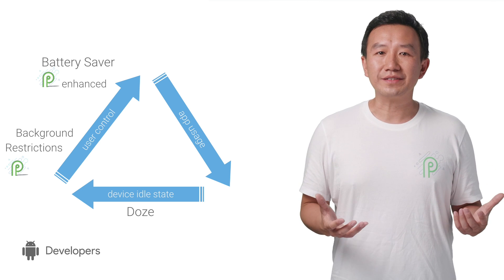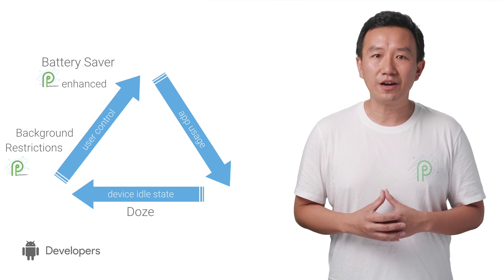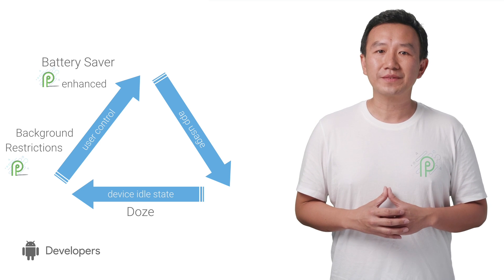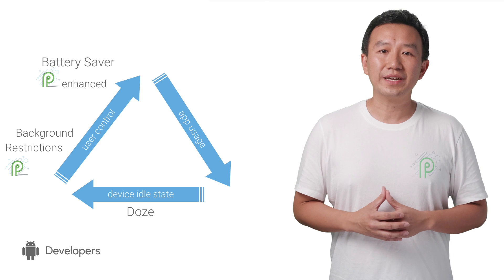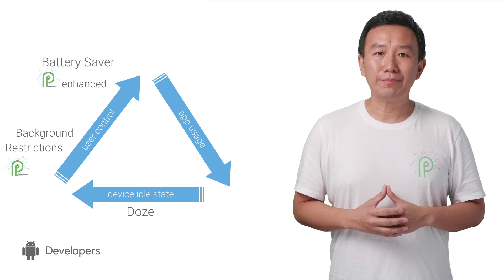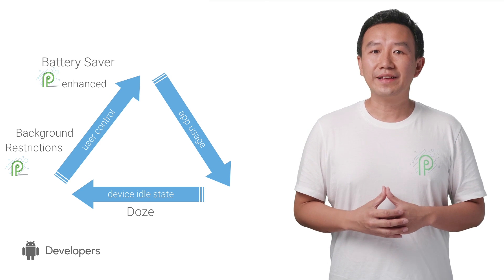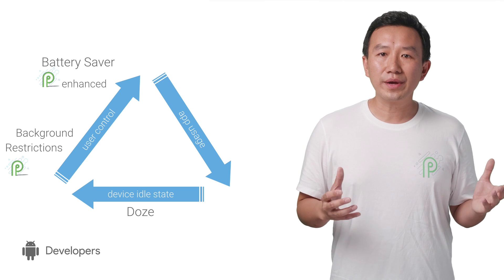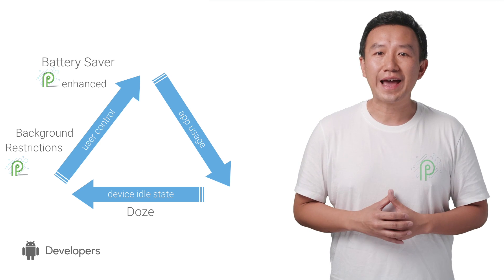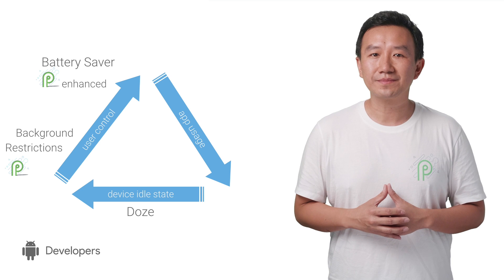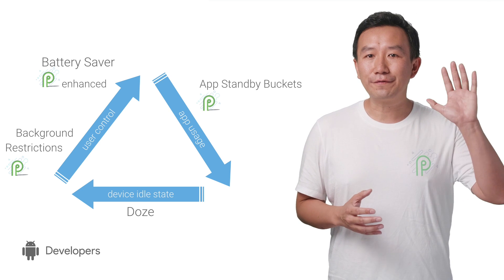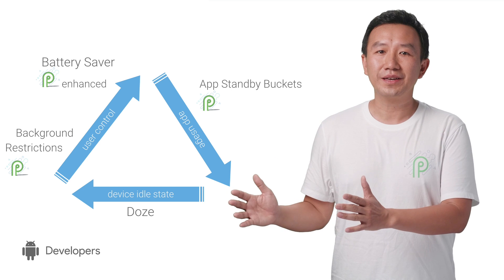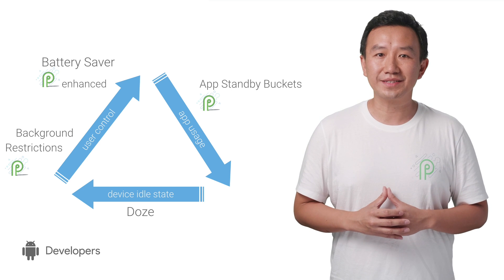Most users only use a small number of installed apps regularly. When you think about it, the total number of installed apps on a device really should have no correlation to battery life. The third dimension aims to tackle this issue based on app usage patterns. In Android P, the system can, in a fine-grained way, apply restrictions to apps that haven't been used recently. Apps are classified into five buckets, ranging from active to never — we call them app standby buckets.